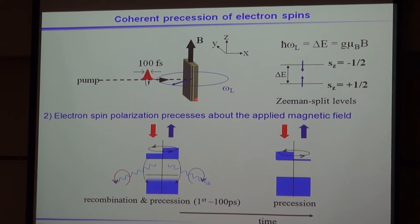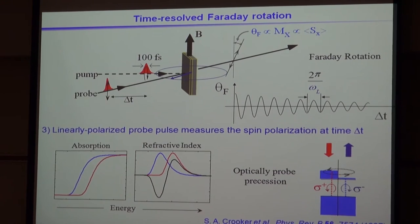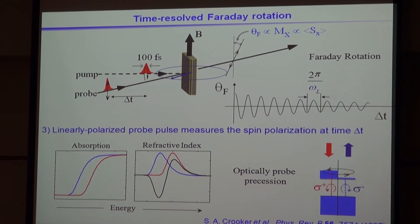If we have a magnetic field, there's a spin splitting and we'll observe the spins precess in the plane perpendicular to the magnet. We then follow the pump pulse with an optical probe pulse, delayed by a time we control with a mechanical delay line, so it arrives at the sample at a different time than the pump. By varying that time delay, we can map out both the initial excitation of the spin polarization and then its oscillation, precession, and decay.